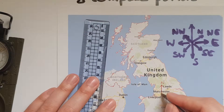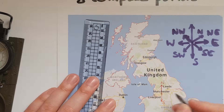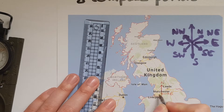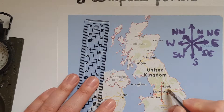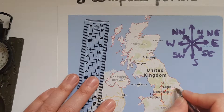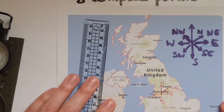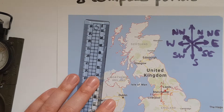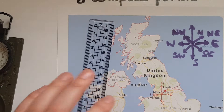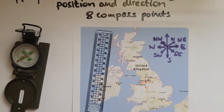So there is north, and we have south. On the right we've got east, and west on the left. Now, Leeds — where is Leeds? Leeds is north-east of Manchester. As you can see, there is north, there is east — this is north-east of Manchester.